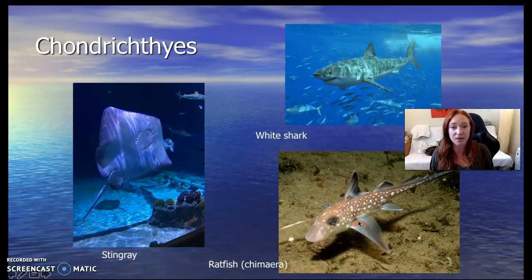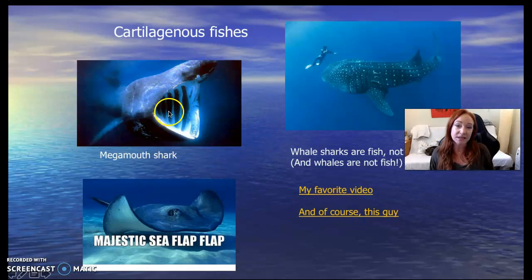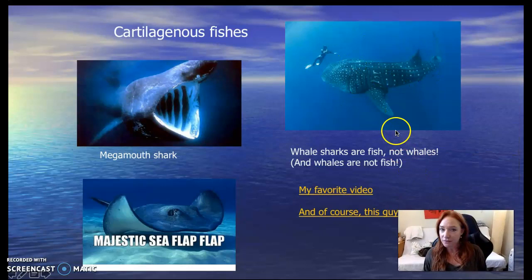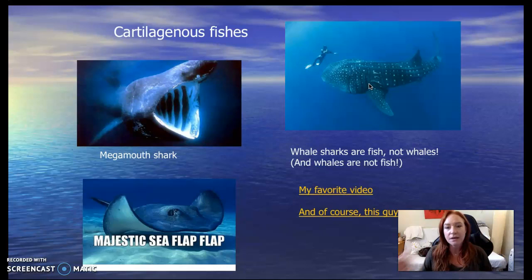Not all cartilaginous fish are big scary sharks with teeth. There are quite a few sharks that are filter feeders. These two are examples of filter-feeding fish: a megamouth shark and a whale shark. A whale shark is the largest fish that has ever lived, and they both eat plankton — they swim through the water with their mouths open, filter whatever goes in, and swallow it. They have tiny throats, and they're both very gentle, docile animals that want nothing to do with people.